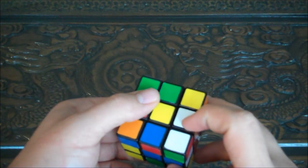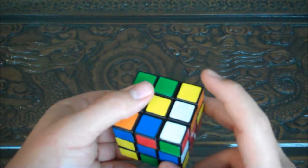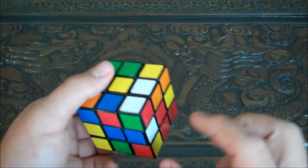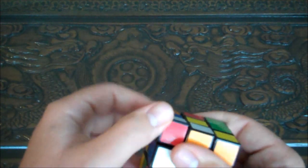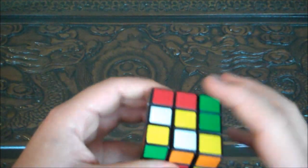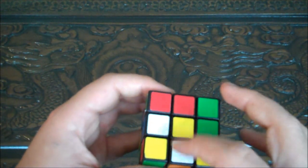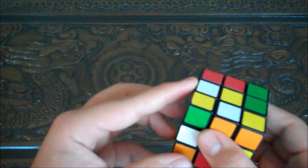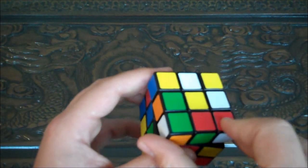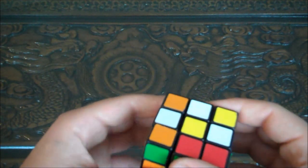We've already got one white piece on the top. So we're going to look on the sides, and here's another white piece, so we want to turn it to the top. Yellow is our top, so now we've got two white pieces set where we want them. You just keep doing this. We've got a white piece here, so we're going to turn the top, and then turn the white piece up.